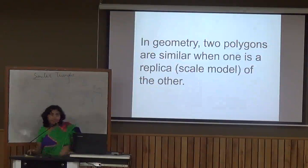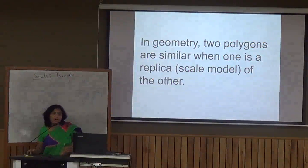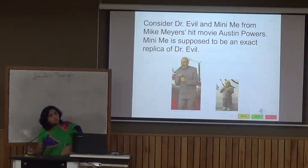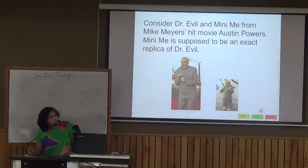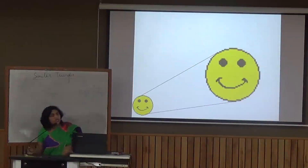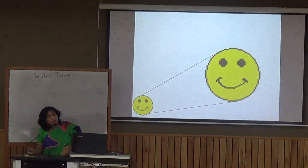In geometry, two polygons are similar when one is a replica of the other — that means the two polygons look alike. Consider Dr. Evil and Mini-Me from Mike Myers' hit movie Austin Powers. Mini-Me is supposed to be an exact replica of Dr. Evil, so they are similar to each other. These two figures are different in sizes but look alike, so they are similar to each other.